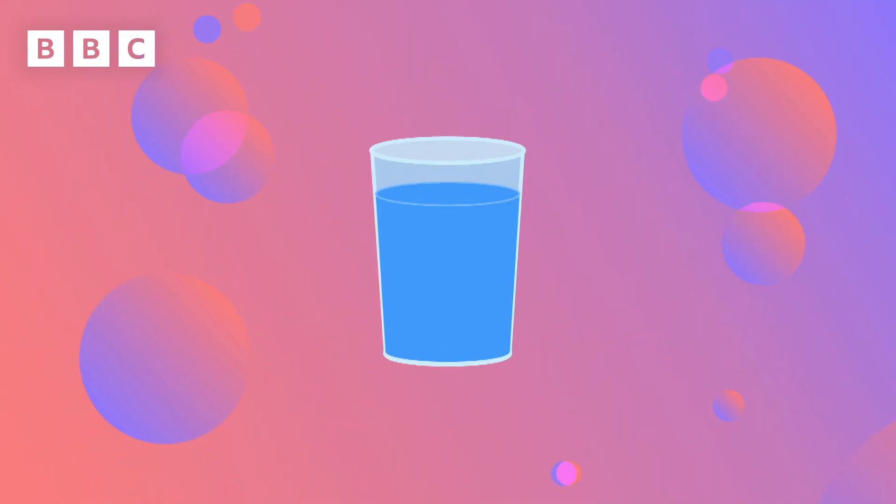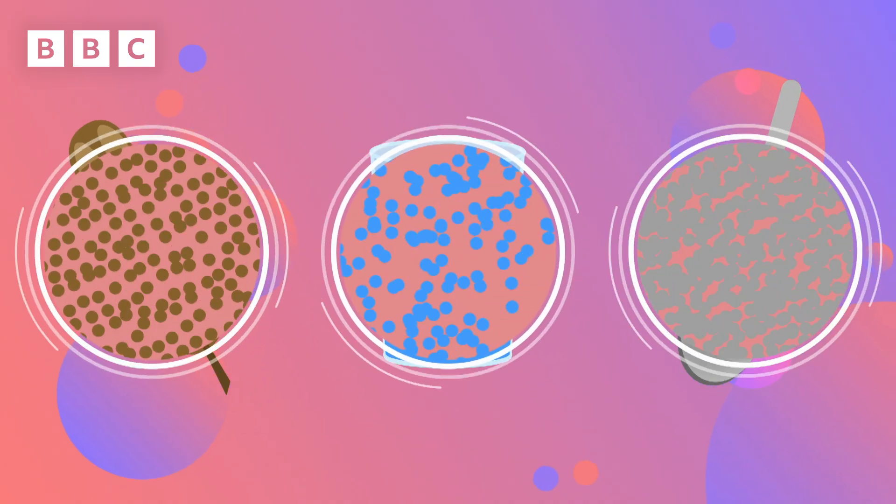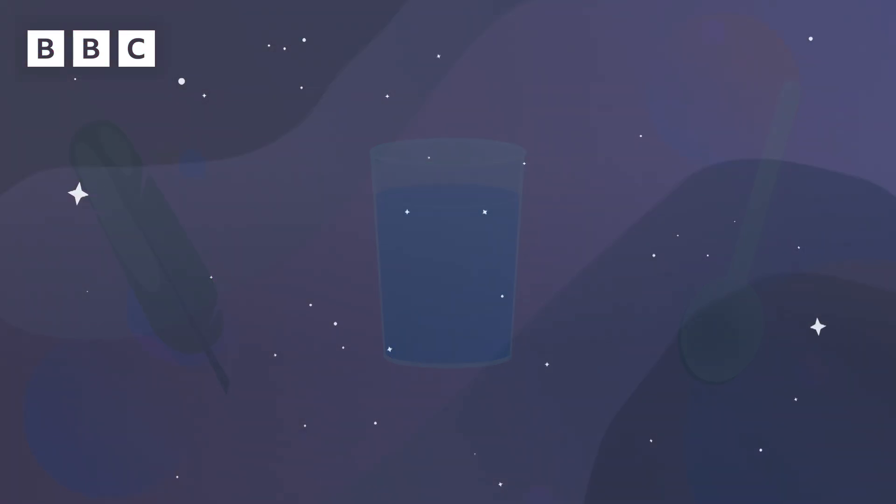Everything is made up of matter. Matter is another word for the stuff things are made from. Everything around us, everything you can see and touch is made of matter. Anything that takes up space is called matter.